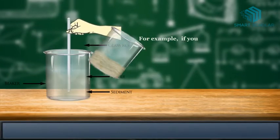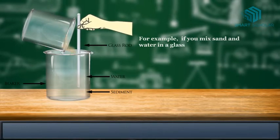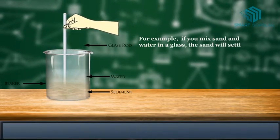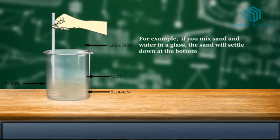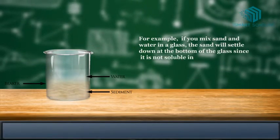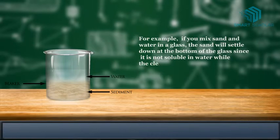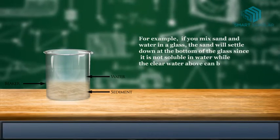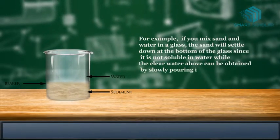if you mix sand and water in a glass, the sand will settle down at the bottom of the glass since it is not soluble in water, while the clear water above can be obtained by slowly pouring it out.